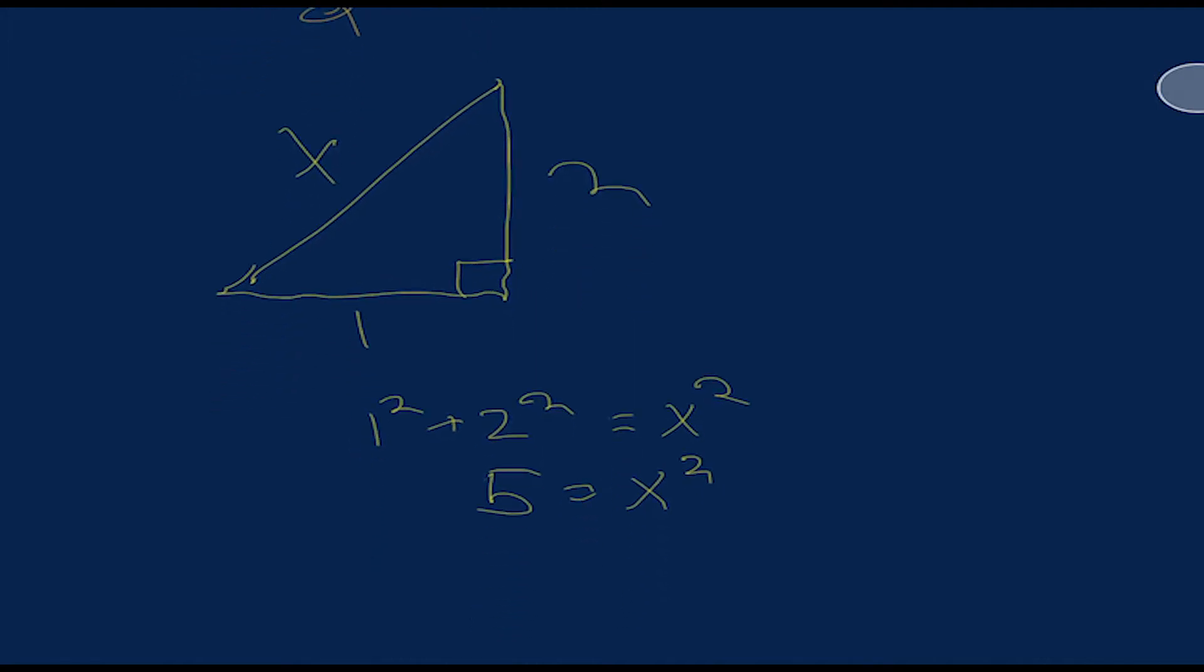If we draw another triangle and we say that we have side lengths of one and two and we want to solve for the hypotenuse X, then all that we need to do is take one squared plus two squared and set that equal to X squared. We know that one squared is just one, and two squared is four, and we add the two of them together to get that five equals X squared. To solve for X, all that we have to do is take the square root of both sides. And what we end up with is that the square root of five equals X. Therefore, our hypotenuse is equal to the square root of five.